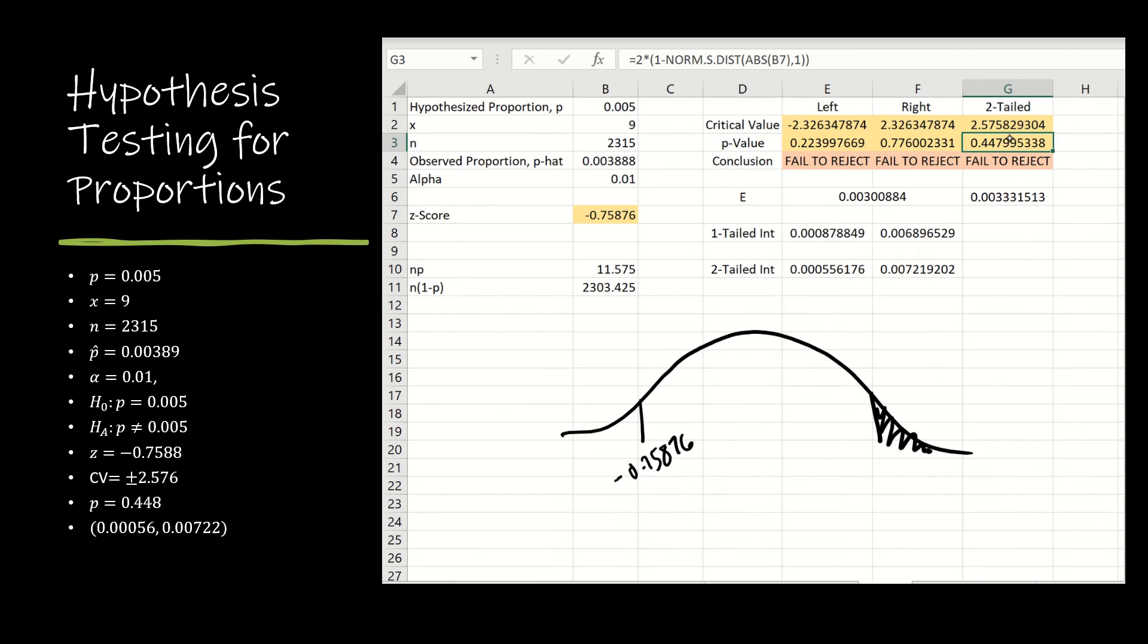So to find the area to the right of positive 0.75876, that's 1 minus norm.s.dist of the positive value, comma 1. And then I'm taking it times 2, so that's going to give me my p-value.